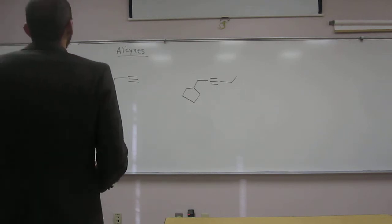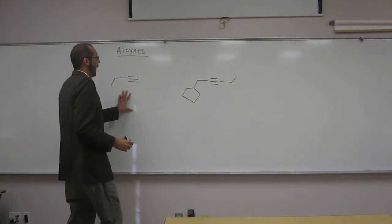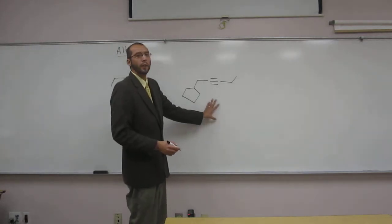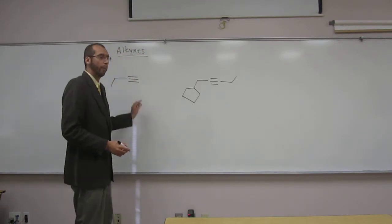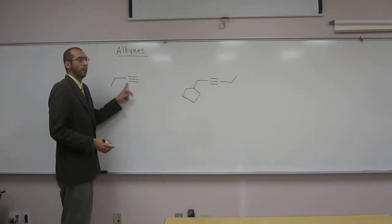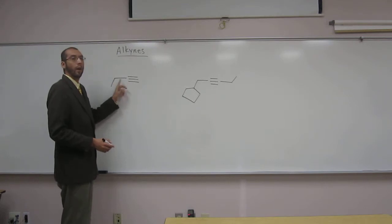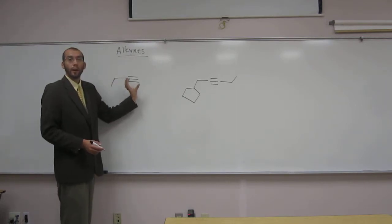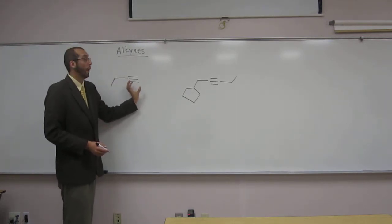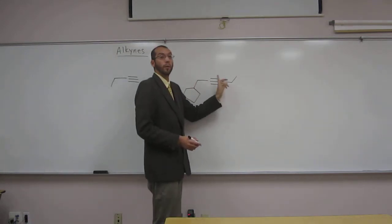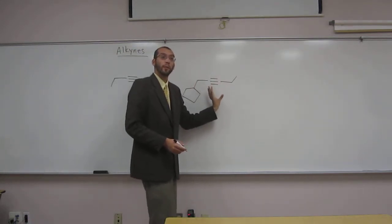If we look at these two alkynes, hopefully you can tell that they're alkynes with a triple bond there. This one here has one R group off of the alkyne function. Here we have two R groups off of the alkyne function. Does everybody see that?